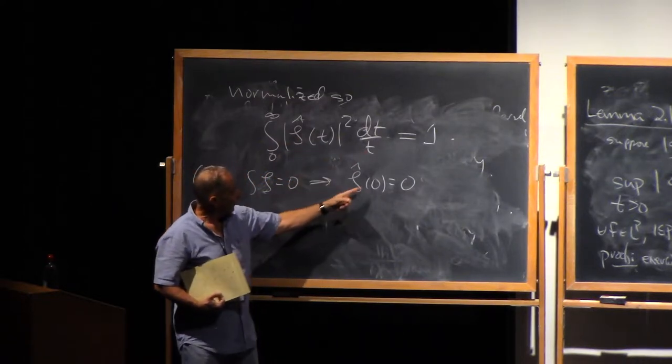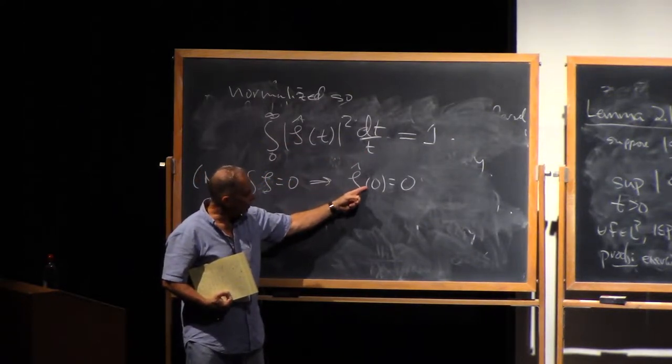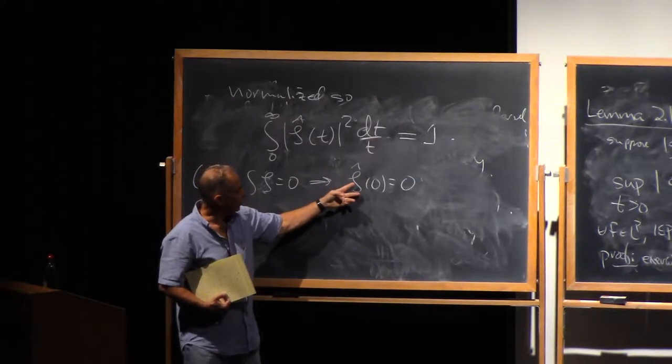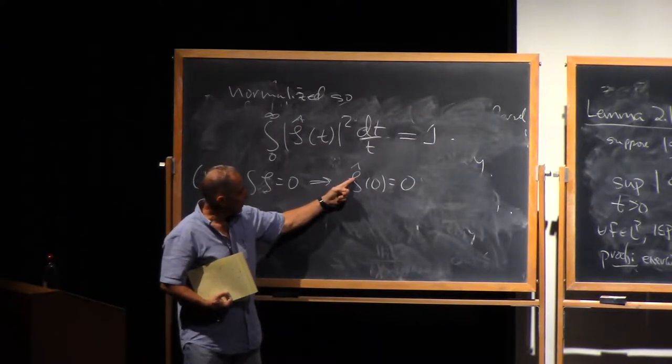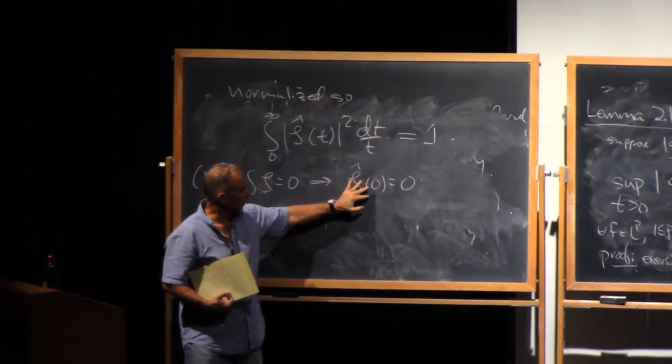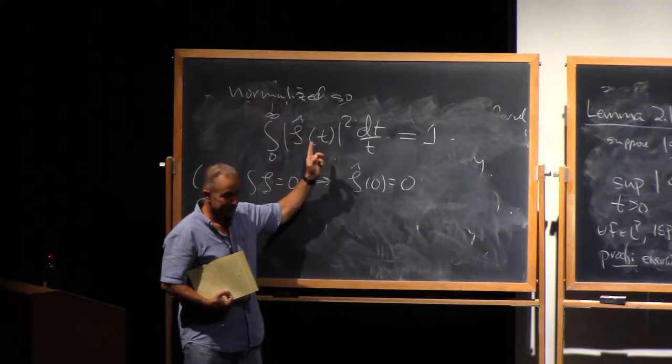Integral converges at infinity, and since zeta hat of zero is zero and zeta is smooth, then at least zeta hat grows at worst linearly when t is less than one. So that kills this singularity and this integral converges.